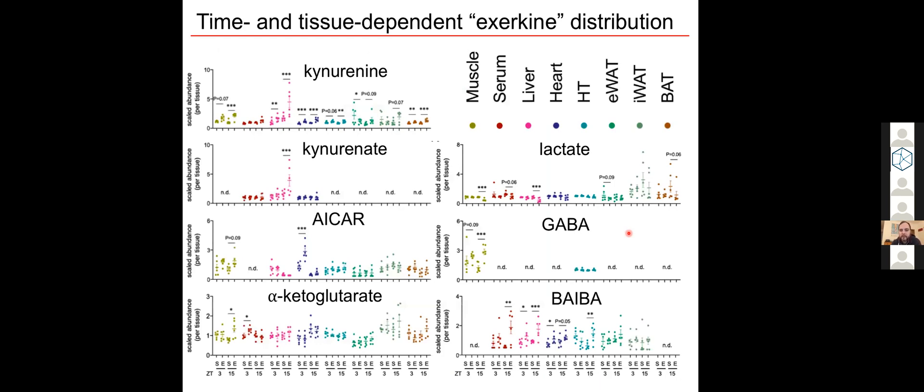Here are some plots of some established exerkines. When we could detect them, we noted distinct differences in their tissue distribution, and especially in their response to timed exercise. So as you see here, not all exerkines behave the same way, and many showed a greater response to exercise at night than during the day.